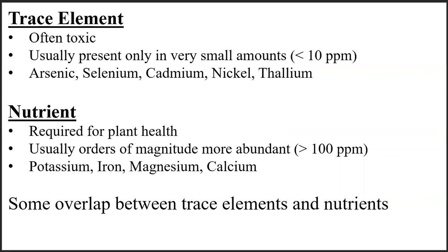For the elements, the elements we analyzed can be labeled as either trace elements — like arsenic, selenium, cadmium, nickel, and thallium — which in normal soils are present in only very small amounts, or nutrients like potassium, iron, magnesium, and calcium, which are usually orders of magnitude more abundant. Large concentrations of nutrients are essential for plant health, while even moderate concentrations of trace elements are usually harmful. It is worth noting that some trace elements are actually beneficial in very small amounts.